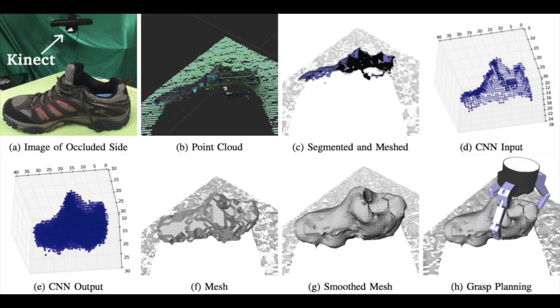At runtime, the point cloud for the target object is acquired from a 3D sensor, scaled, voxelized, and then passed through the CNN. The output of the CNN, a completed voxel grid of the object, goes through a post-processing algorithm that returns a mesh model of the completed object.